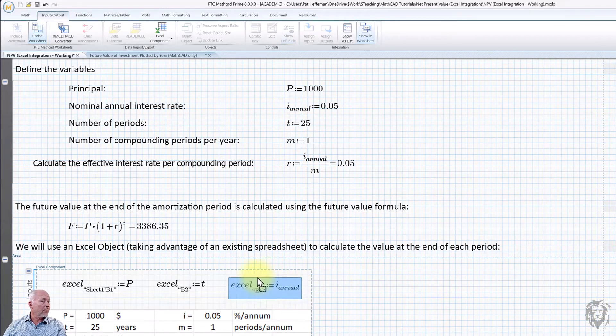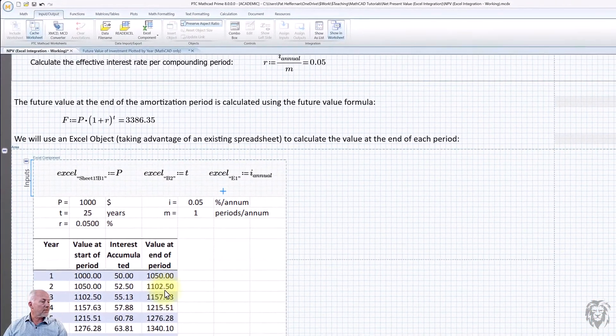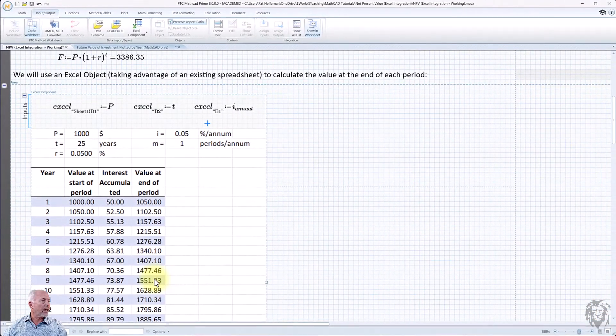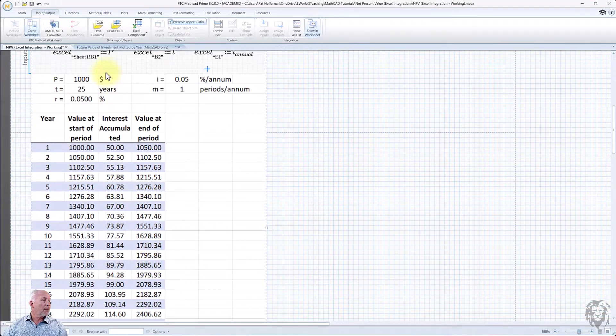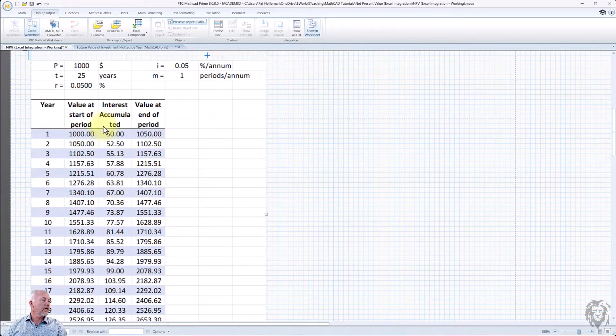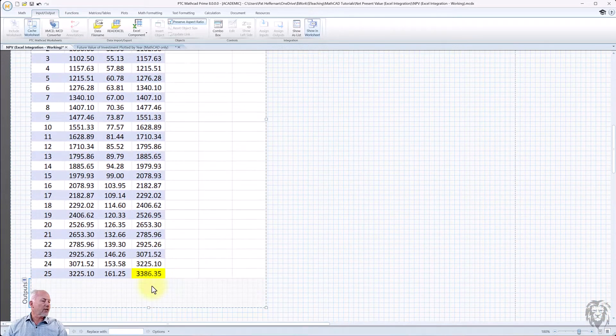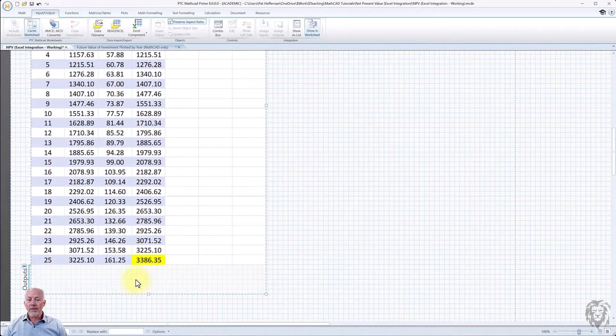Now when it takes on the value of course, Excel naturally goes and updates the spreadsheet for all of the other values that are calculated in the spreadsheet. So now we've passed these values to the spreadsheet. We see them updated here. The calculations update themselves automatically. And we now have values for our future value for each year along the way.